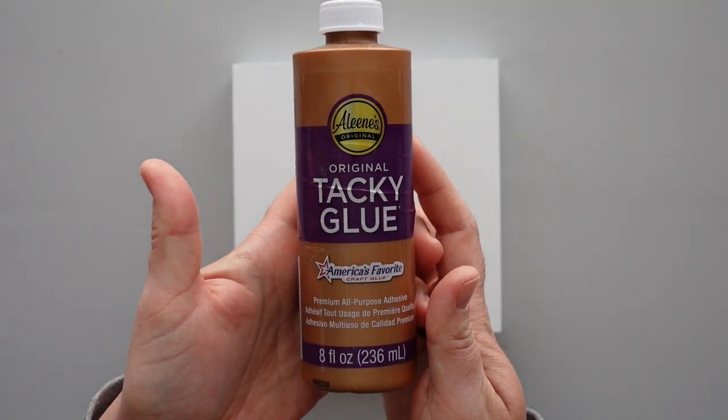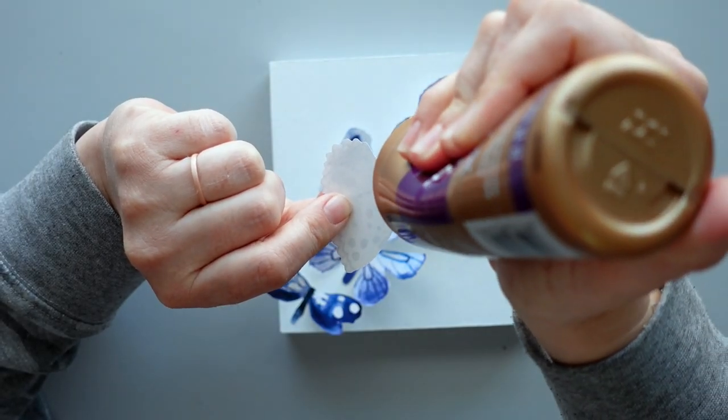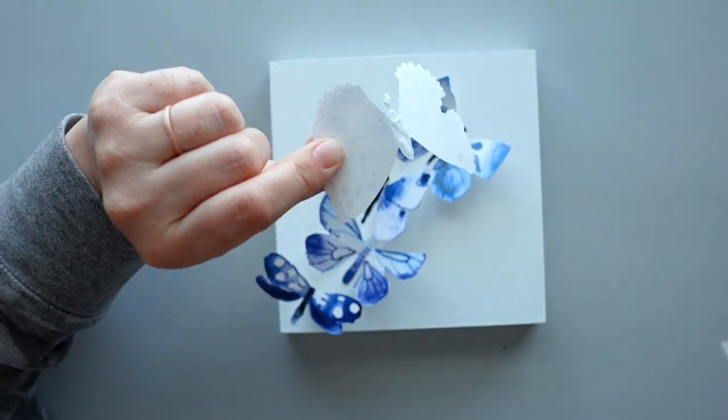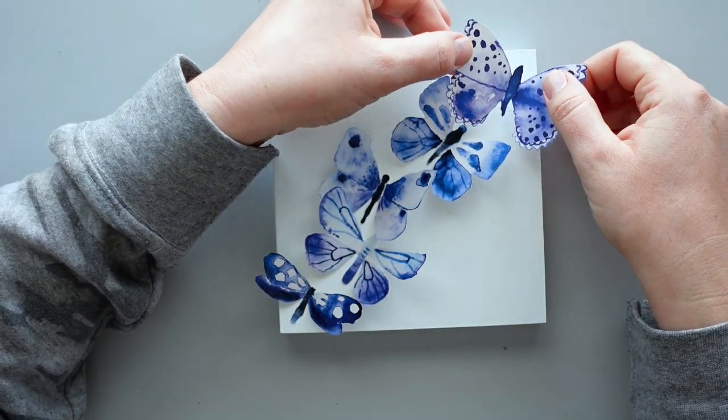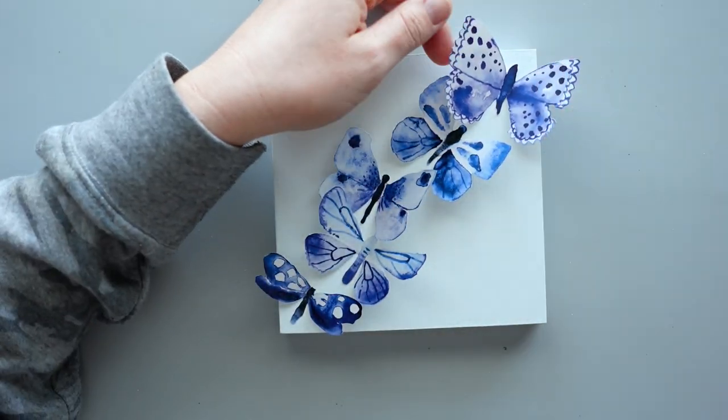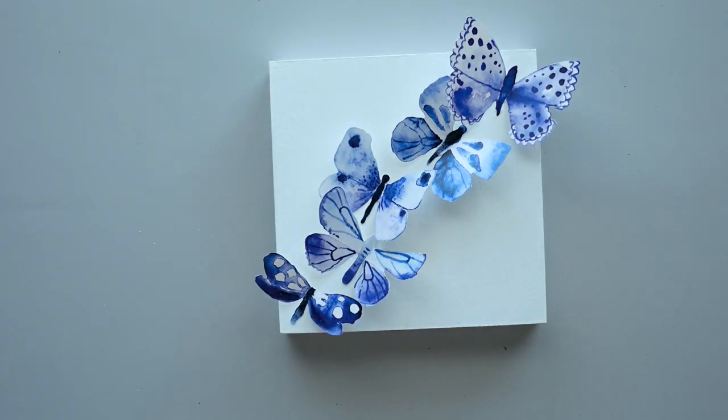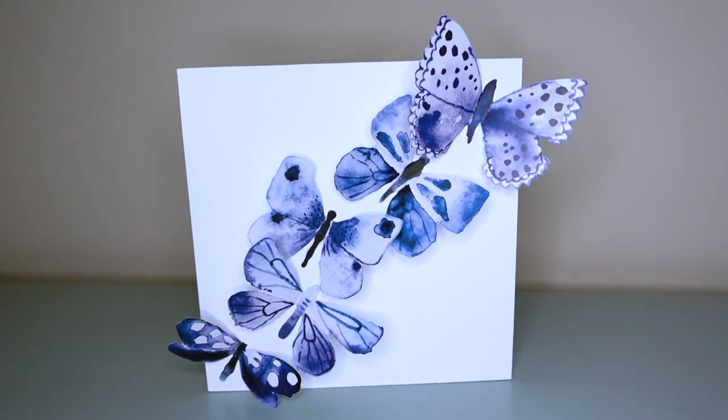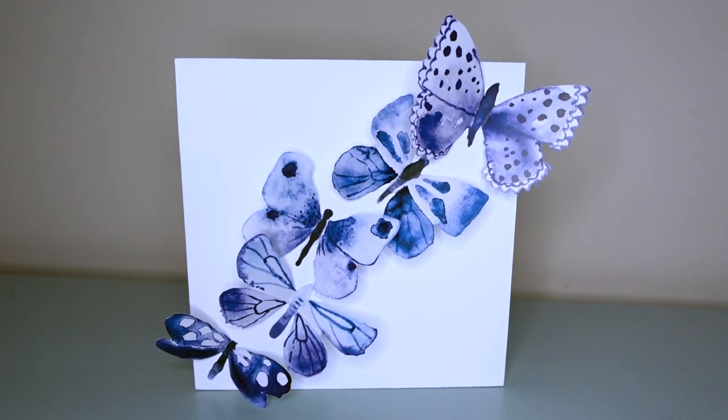I arranged the butterflies on the sign until I was happy with their placement. Then I used some tacky glue to adhere the butterflies to the sign. I used tacky glue because it doesn't dry as quickly as hot glue so I had some time to move the butterflies around if I wanted to change their placement on the sign. Once the glue was dry, this fun little sign was complete.